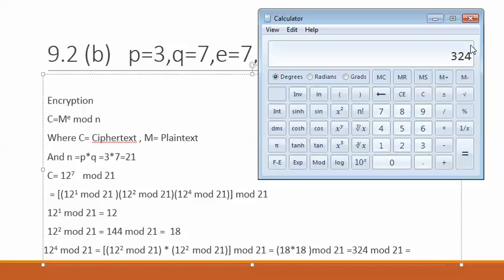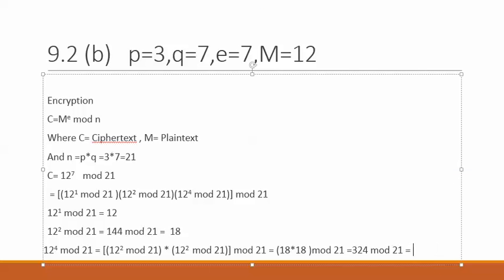We have 324 mod 21. We divide 324 by 21, then subtract the part which is before the decimal, which is 15. We subtract 15, now multiply by 21, and we are left with 9.